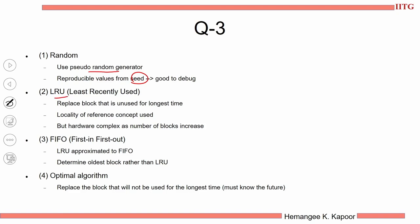Least recently used (LRU) will replace the block that has been unused for the longest time. Why? Because we are relying on the principle of locality — because this block was not used right now, it is likely that it will not be used in the future. So with the principle of locality of reference, I decide that the oldest block will be removed. But with this, the hardware complexity increases because I need to keep track of which block was used, when, and so on. The recency of uses has to be recorded and maintained to decide which block goes out. So the hardware complexity of this decision is very high.